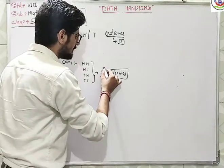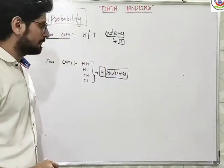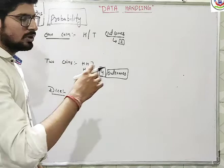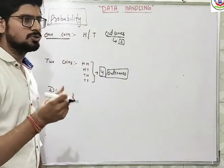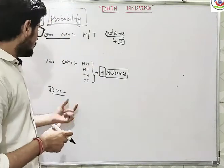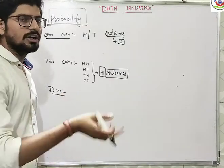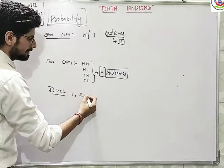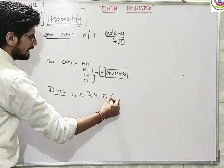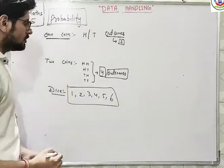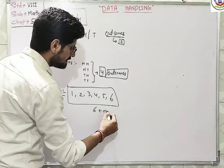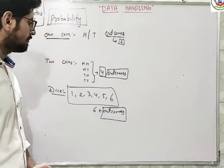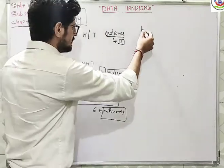So total number of outcomes you have is 4. Then after, we have dice. If we roll dice, that is used to play. Dice has how many number of outcomes? That is 1, 2, 3, 4, 5, and 6. So dice has 6 number of outcomes.